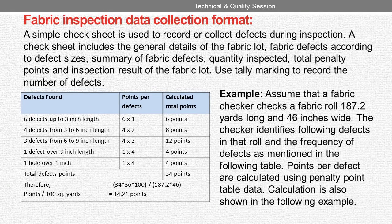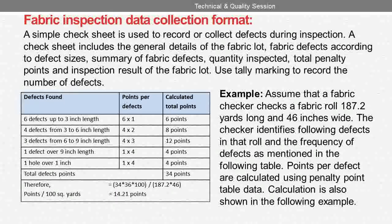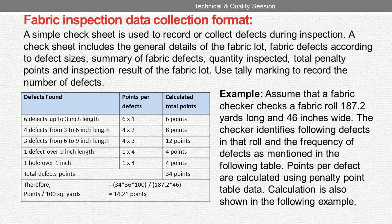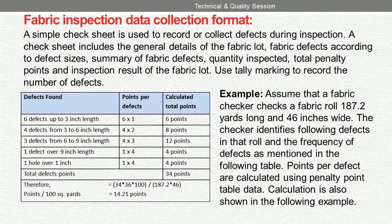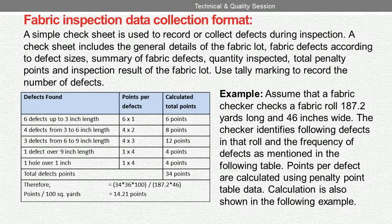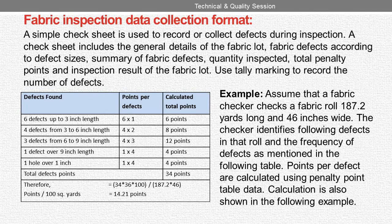Defects found and points calculated: 6 defects up to 3 inches length → 6 × 1 = 6 points. 4 defects from 3 to 6 inches length → 4 × 2 = 8 points. 3 defects from 6 to 9 inches length → 3 × 4 = 12 points. 1 hole over 1 inch → 1 × 4 = 4 points. Total defect points = 34 points. Therefore, points per 100 square yards = (34 × 36 × 100) ÷ (187.2 × 46) = 14.2 points.